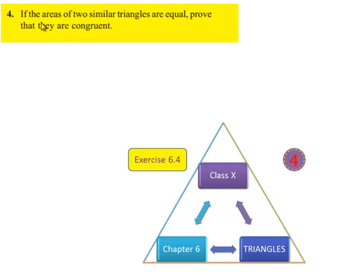Now, moving on to the fourth question: if areas of two similar triangles are equal, prove that they are congruent.